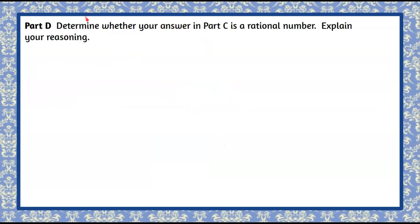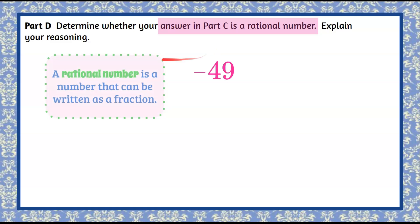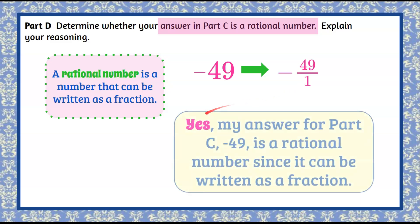Here's part D. Determine whether your answer in part C is a rational number and explain your reasoning. Our answer from part C was negative 49. A rational number is a number that can be written as a fraction. We know that negative 49 can be written as negative 49 over 1. So yes, negative 49 is a rational number since it can be written as a fraction.